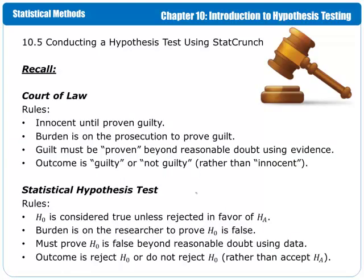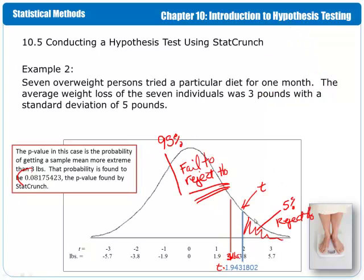We go back to the court of law situation as a reminder: the burden is on the prosecution to prove guilt; the burden is on the researcher to prove the null hypothesis is false; and it must be proven false beyond reasonable doubt using the data. So anything showing no weight loss or weight gain does not show the diet to be effective, but values way out in the positive tail show that it is. In order to prove that it's effective, it has to be extreme — not just greater than zero, but very much greater than zero, beyond that cutoff value.